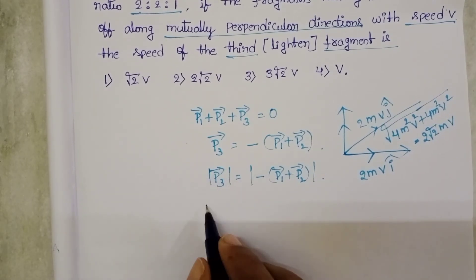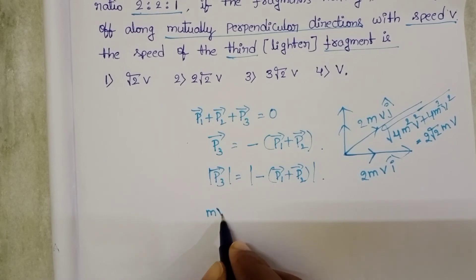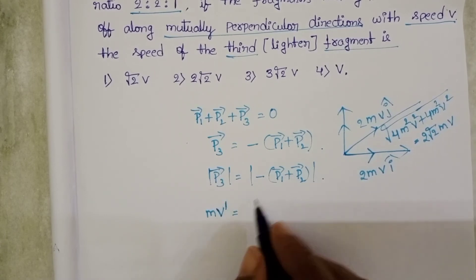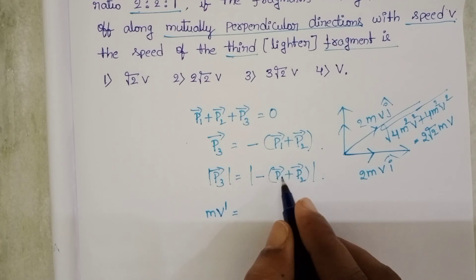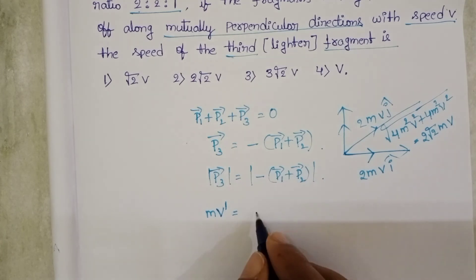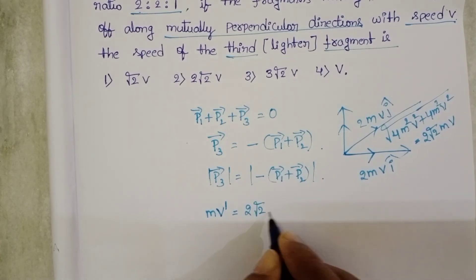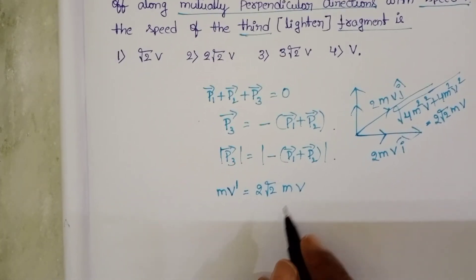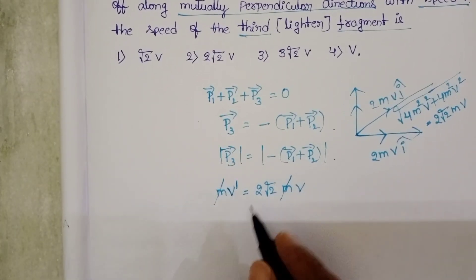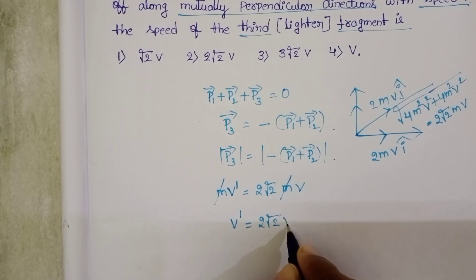And mass of the 3rd part is M and velocity let it be V dash. So in place of mod of P1 bar plus P2 bar, take 2 root 2MV. Mass get cancelled on both sides. Then velocity of the 3rd part is equals to 2 root 2V.